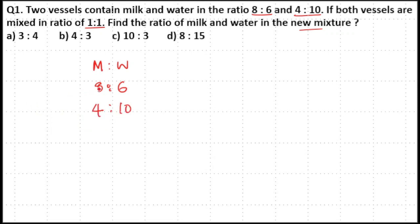Here if you check, 8 plus 6 is equal to 14 parts. Here 4 plus 10 is also 14 parts. And if both the vessels are mixed in ratio 1:1, that means 1 to 1.